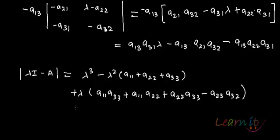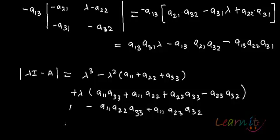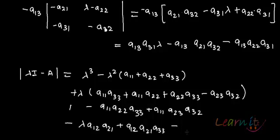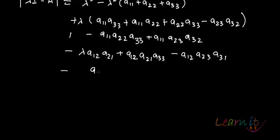Then we also have the constant terms. From the first expansion: minus A11·A22·A33 plus A11·A23·A32. From the second term: minus λ·A12·A21 plus A12·A21·A33 minus A12·A23·A31. From the third term: plus A13·A21·A32 minus λ·A13·A31.